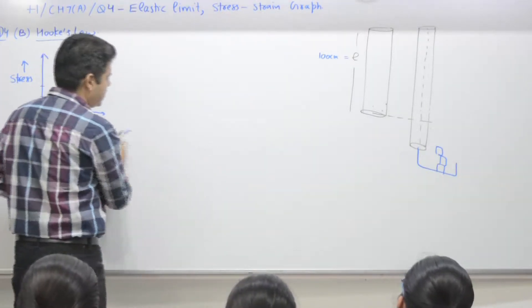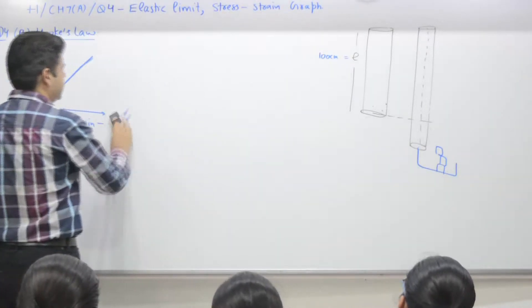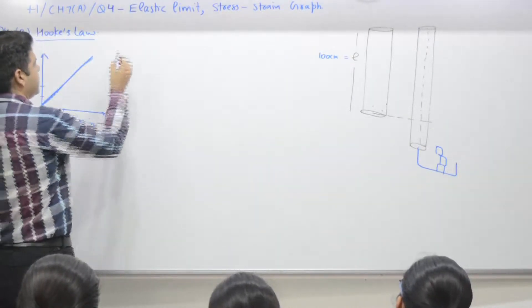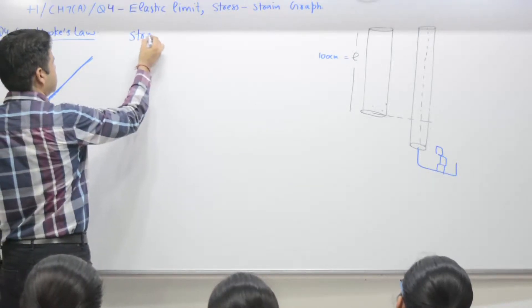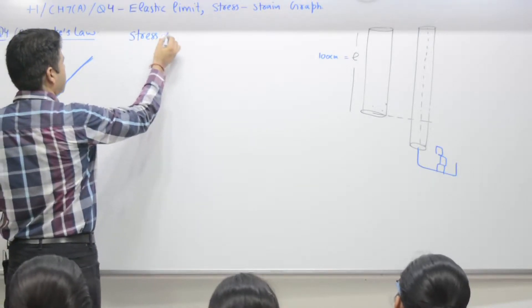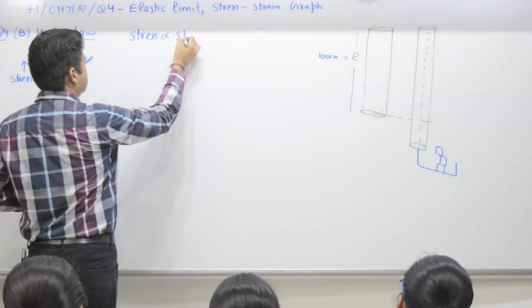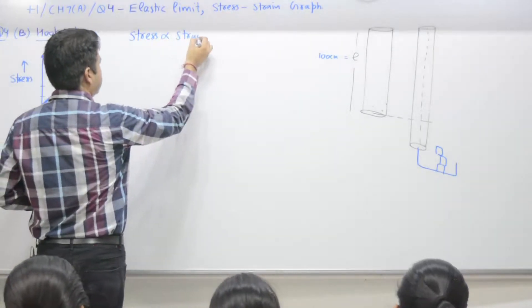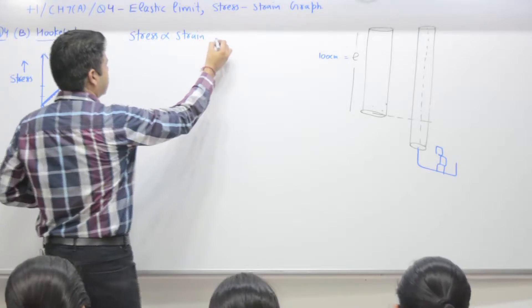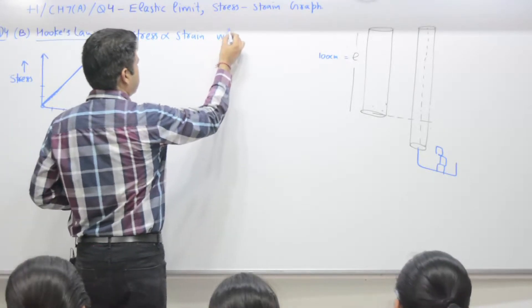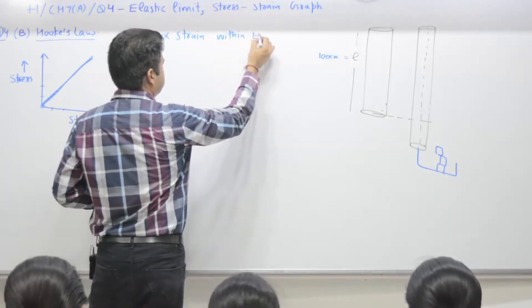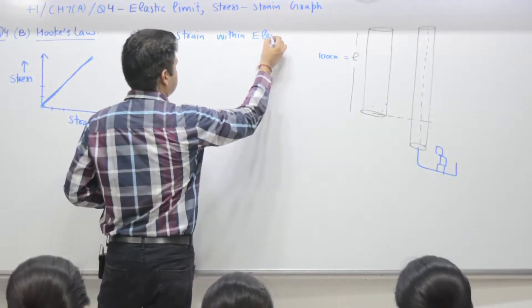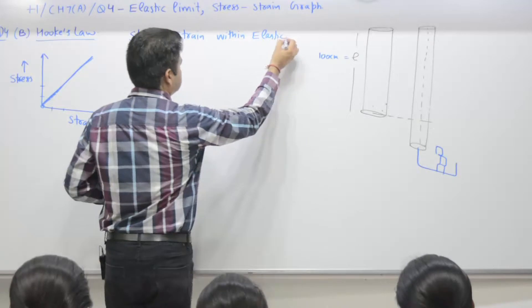The constant of proportionality is known as — the law is: stress is proportional to strain within elastic limit. This law is known as Hooke's law.